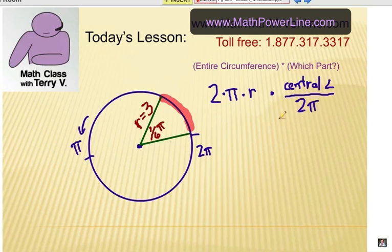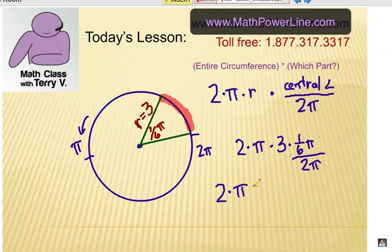Alright, now it gets a little tricky with fractional central angle radians here, but I'll show you an example here. So that would be 2 times π times 3 times, the central angle is 1 sixth π. And we're going to divide that by 2π. Now it gets a little crazy looking, but let's simplify that.